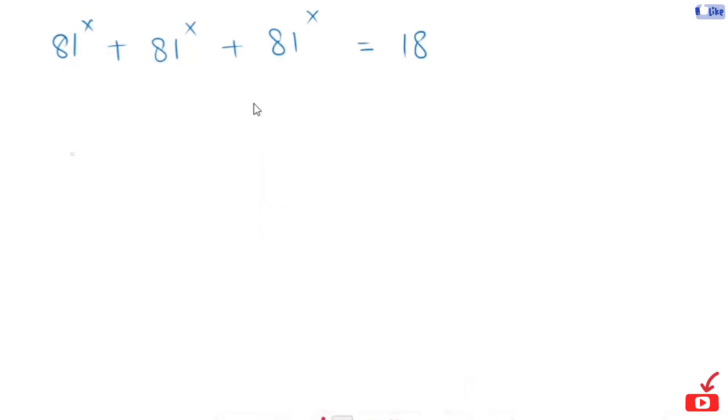So, this will turn to 81 raised power x and in replacement of this, I will get 1. This part of common, so I will get one here. In this area, I will take common. There you get 1. Now, that will be 18.